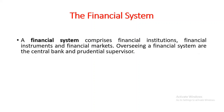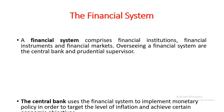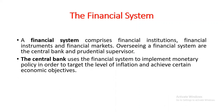A financial system includes all financial institutions, financial instruments like shares and bonds, and financial markets like organized markets and over-the-counter markets. In a financial system, the central bank is the main regulator. The central bank uses the financial system to implement its monetary policy — that means, with the help of the financial system, the central bank can control money supply, interest rates, and so on.